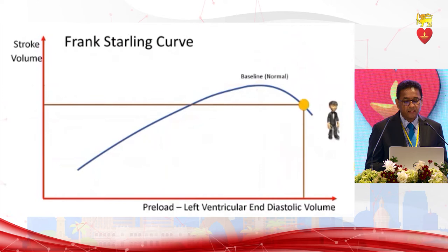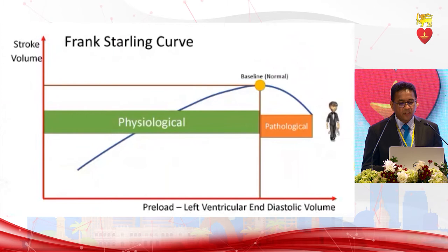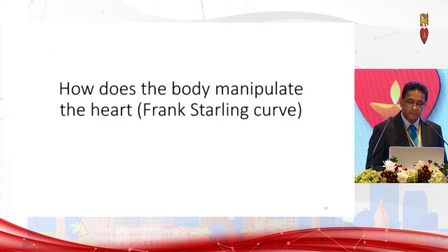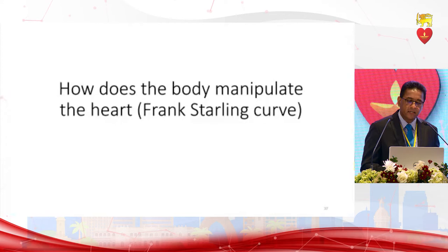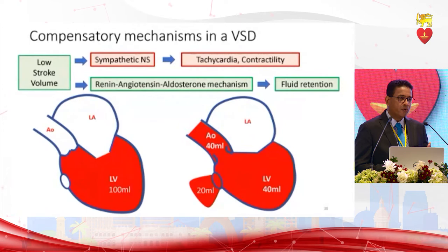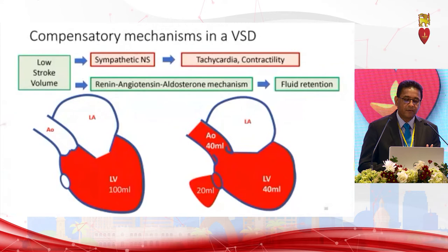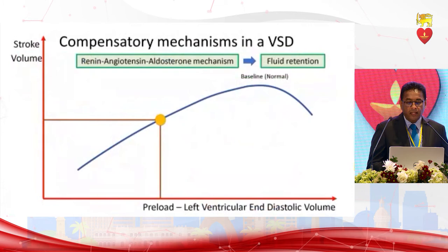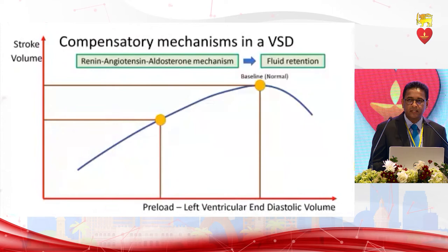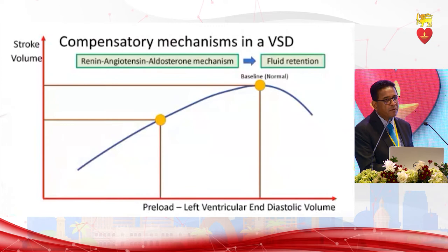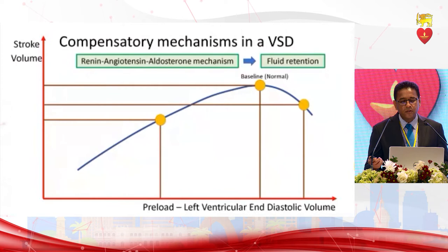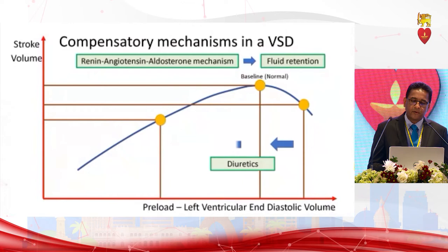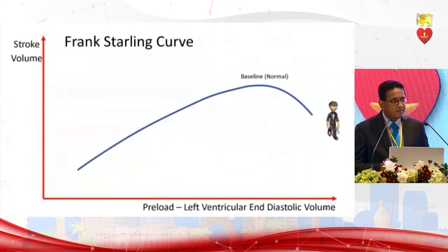Up to the peak is physiological; beyond the peak is pathological. Take a patient with VSD: low stroke volume stimulates sympathetic nervous system and activates the renin-angiotensin-aldosterone mechanism, causing fluid retention. This keeps increasing LV end-diastolic volume, but a major portion goes through the VSD. It never achieves the optimum, goes into the pathological phase, and we must intervene with diuretics to bring the ventricle back to normal. That is the basis of the Frank-Starling curve in day-to-day practice.